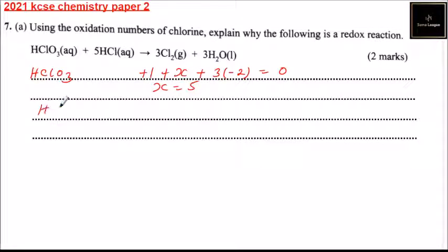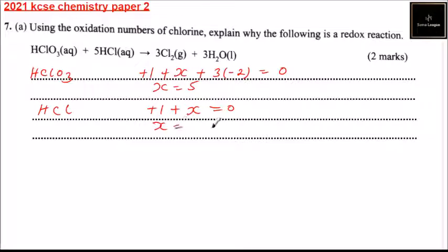For HCl, hydrochloric acid, we have positive 1 for hydrogen plus x equals 0, so x equals minus 1. For chlorine gas (Cl₂), the oxidation number x is equal to 0.